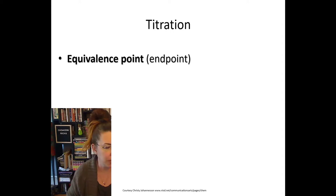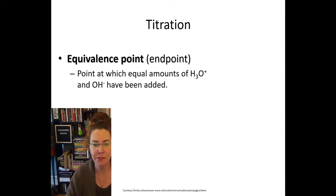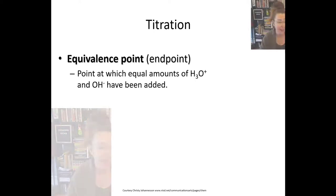The equivalence point is also known as the end point. And that is defined as the point at which equal amounts of hydronium ions and hydroxide ions have been added. Now this does not mean that equal amounts of acid and base have been added. Because some acids, like hydrochloric acid, give one mole of hydronium ions per one mole of acid. But some of them, like sulfuric acid, which is H2SO4, gives more than one mole of hydronium ions. It gives two moles of hydronium ions for every one mole of acid because it has two hydrogens in it. So we refer to it in terms of the moles of or the amounts of hydronium ions and hydroxide ions.